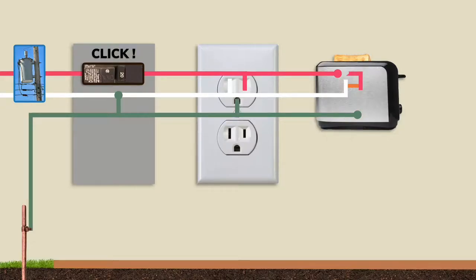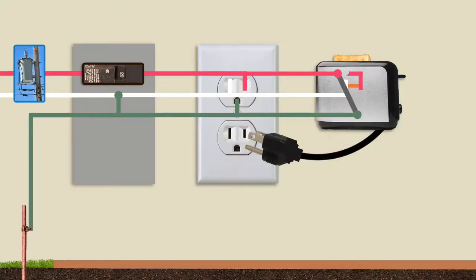If only the hotline comes in contact with the metal case, the breaker still trips because there is a short circuit between the hotline and the ground line which is connected to the neutral line at the panel. This is why modern appliances with metal cases have polarized three-prong grounded plugs.